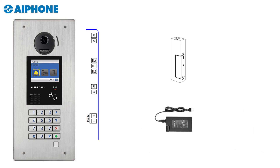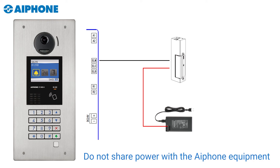To hook up a standard electric strike, we're going to use two connectors on the back of the entry panel: ELC and ELM. First take the ELM and run a wire from it to your electronic door strike. From the other side of the electronic door strike, go to the power supply for the strike — please use a third-party power supply and do not share power with the A phone system. The other side of your power supply goes to ELC. This creates an open circuit, so no electricity runs through your electronic strike until a tenant presses the key button on the tenant station, which closes the circuit between ELC and ELM and unlocks the door.